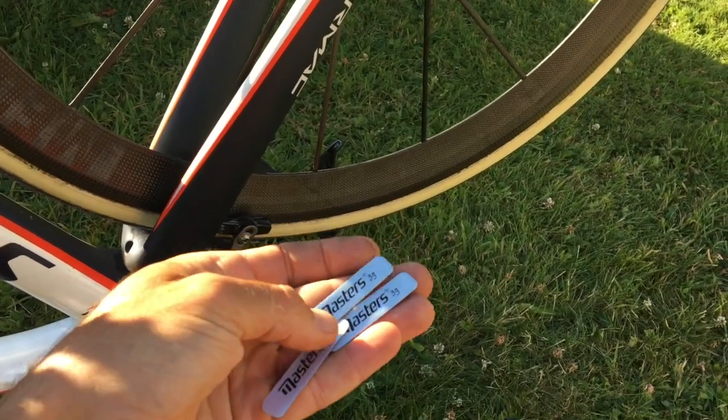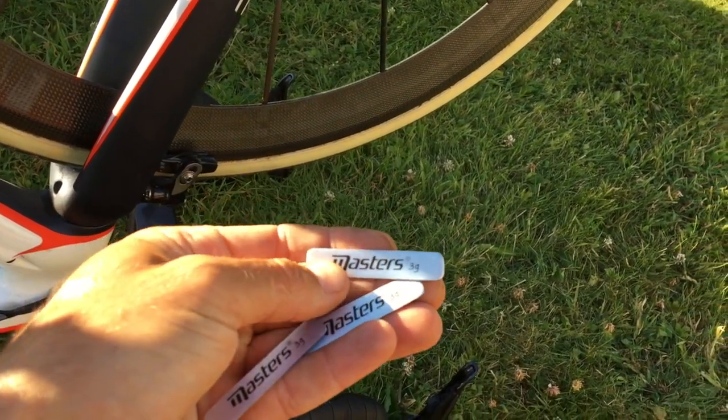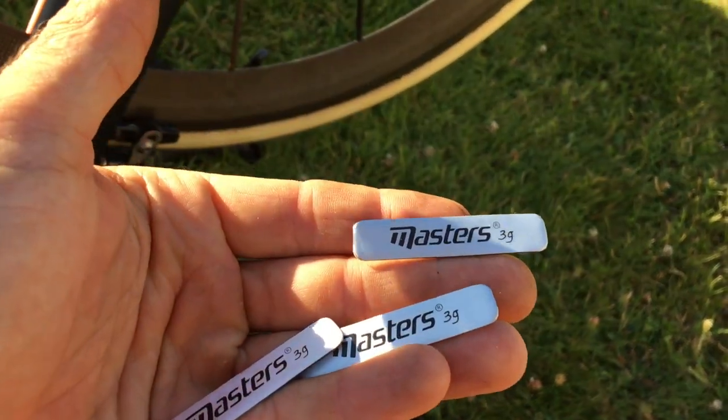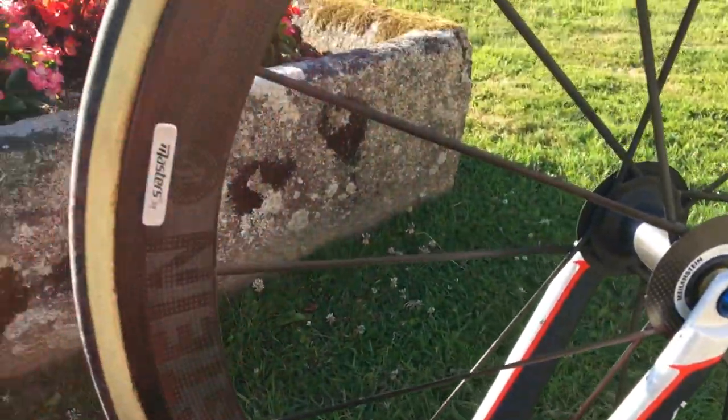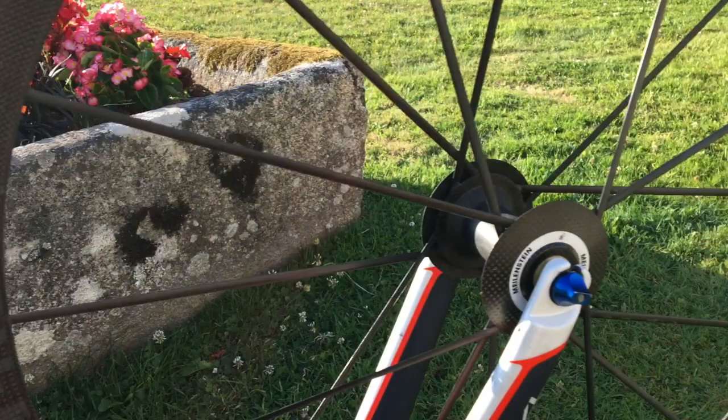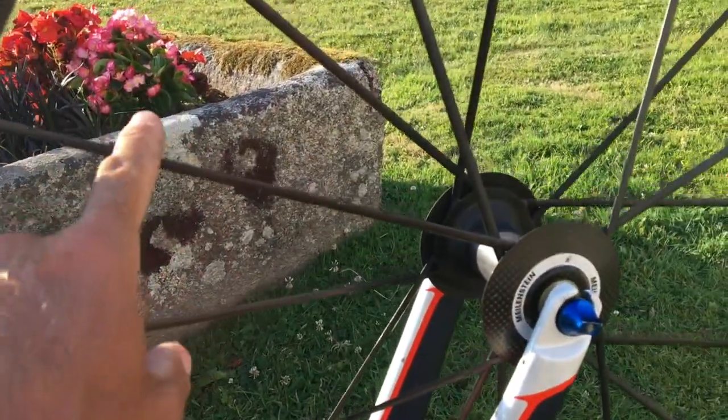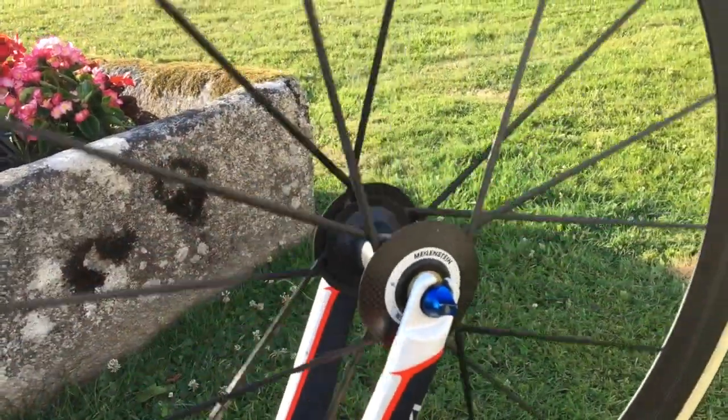Right, so we're back from the golf shop. Here are the weights - little sticky lead weights, three grams each. What I've done is stuck one on the rim at the opposite position to the valve, and it seems to be pretty good.